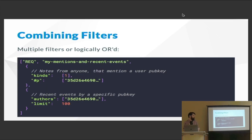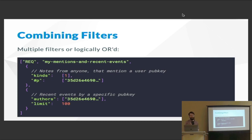A more realistic example of a subscription would have two filters. You put multiple filters together as an OR condition — here's one kind of information I'm interested in, if it matches give it to me; here's something else, if it matches give it to me as well. The first filter looks for kind 1 notes that reference a pubkey — essentially notes that someone wrote and tagged me in. The second filter looks for events authored by a specific pubkey and only the most recent 100. You can see how you can build these things up to get a very specific set of events.